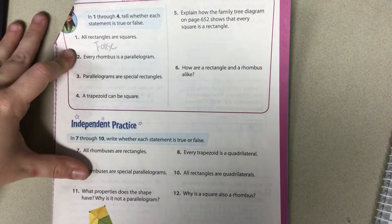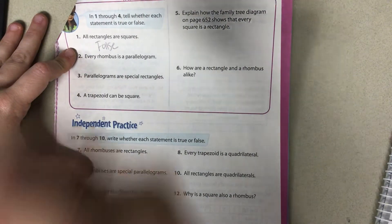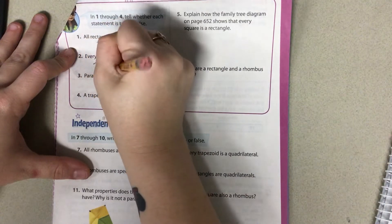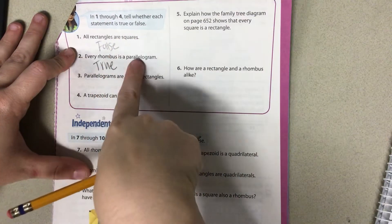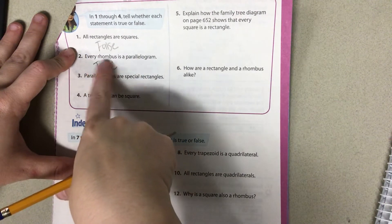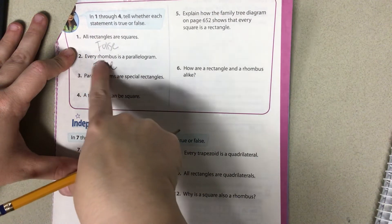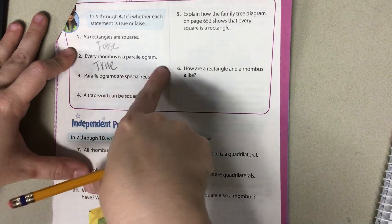Every rhombus is a parallelogram. True. Because if it has all the sides the same length, then they're all going to be parallel.